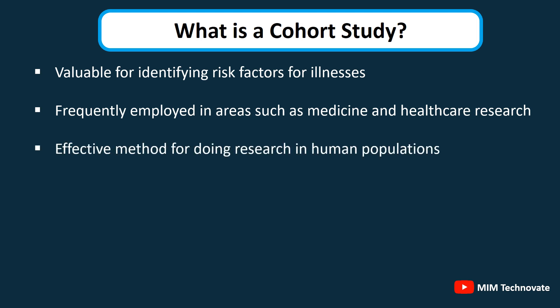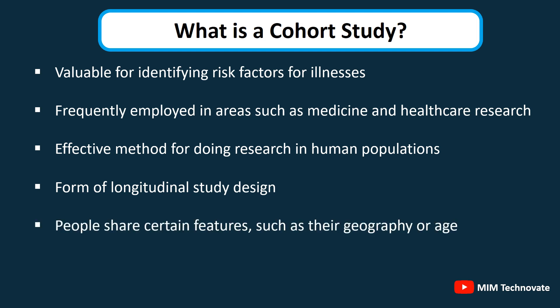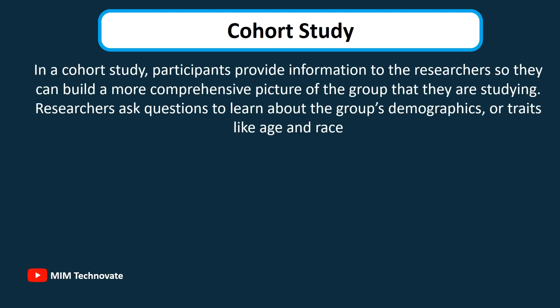Cohort studies are an effective method for doing research in human populations and are a form of longitudinal study design. Longitudinal studies track participants throughout time. People in cohort studies often share certain features, such as their geography or age. Participants provide information to researchers so they can build a more comprehensive picture of the group being studied. Researchers ask questions to learn about the group's demographics, or traits like age and race.